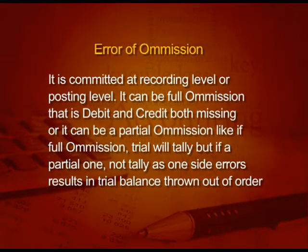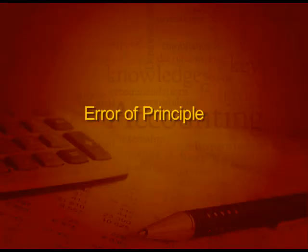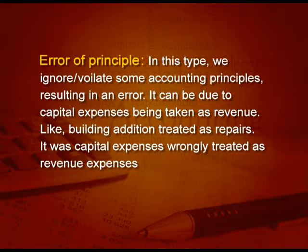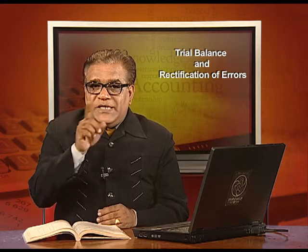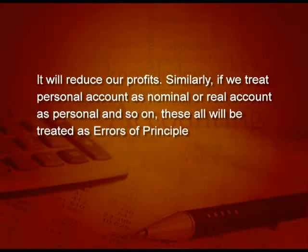A one-sided error always results in the trial balance being thrown out of order. Error number three is error of principle. In this type, we either ignore or violate some accounting principle. It can be due to a capital expense being taken as revenue — for example, an addition to the building treated as repair instead of the building account. Similarly, treating a personal account as nominal or a real account as personal would also be an error of principle.